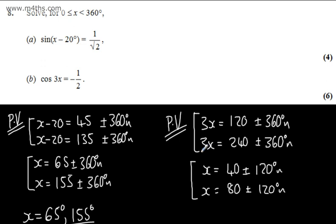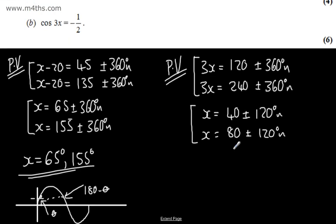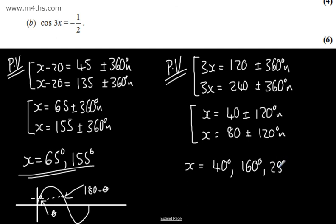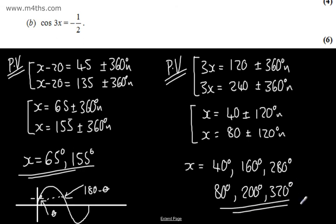We're interested in x between 0 and 360. Starting from x = 40 degrees, adding 120 gives 160 degrees, and adding another 120 gives 280 degrees — adding more takes us outside the interval. From x = 80 degrees, adding 120 gives 200 degrees, and adding another 120 gives 320 degrees.